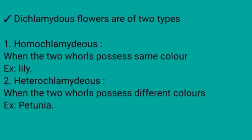Dichlamydous flowers are of two types. Number one, Homochlamydous flowers: in this type, the two whorls of the flower possess the same color, example Lily and Petunia. Number two, Heterochlamydous flowers: in this type, the two whorls of the flower possess different colors, example Petunia.